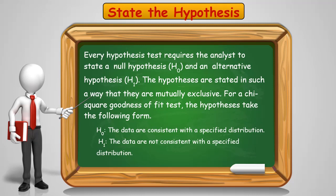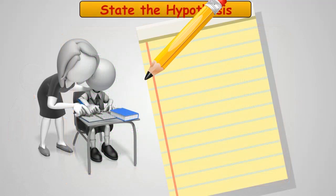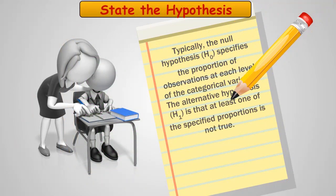When dealing with a chi-square test, typically the null hypothesis is going to be that the data is consistent with a specified distribution, and the alternate hypothesis is the data is not consistent with a specified distribution.